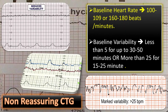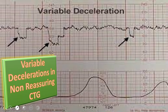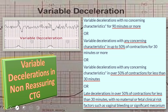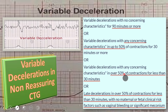Regarding variable decelerations in non-reassuring CTG: variable deceleration with no concerning characteristics for 90 minutes or more indicates non-reassuring CTG. Or variable deceleration with any concerning characteristics in up to 50% of contractions for 30 minutes or more. Or variable deceleration with any concerning characteristics in over 50% of contractions for less than 30 minutes. Or late deceleration in 50% of contractions for less than 30 minutes with no maternal or fetal clinical risk factors such as vaginal bleeding or significant meconium.